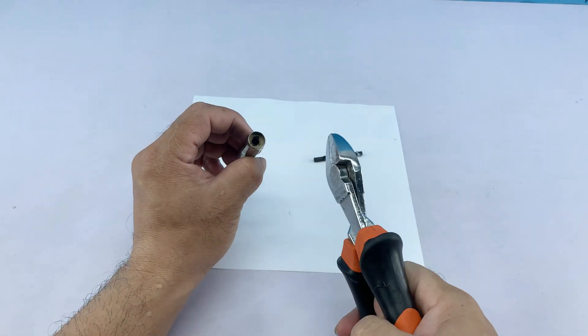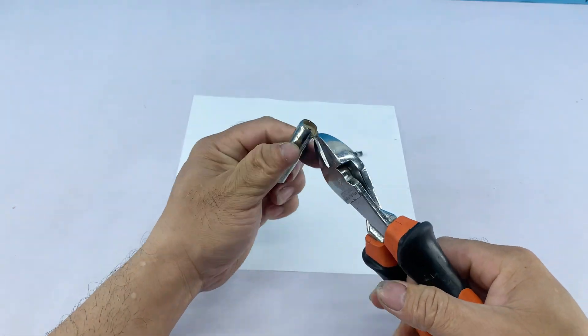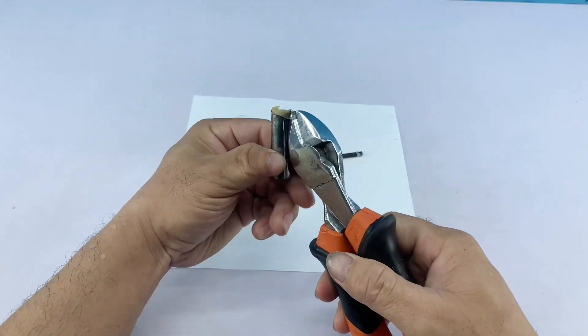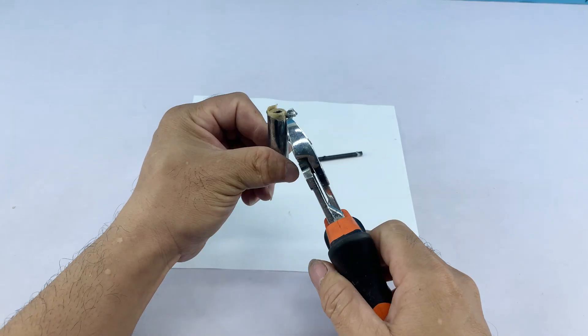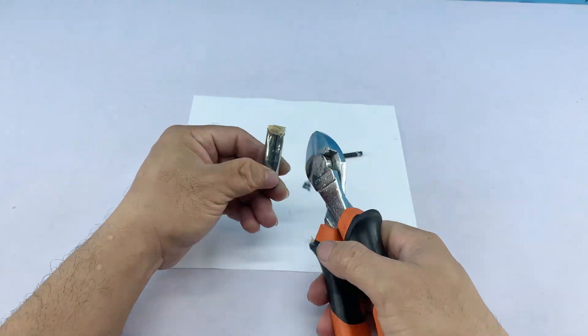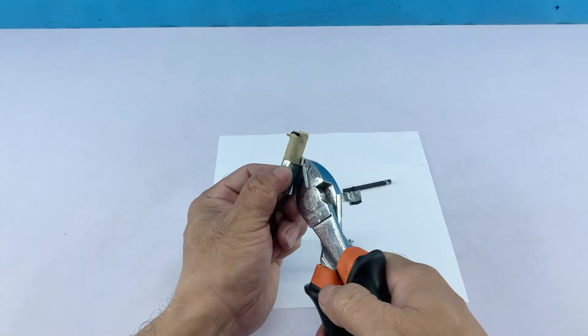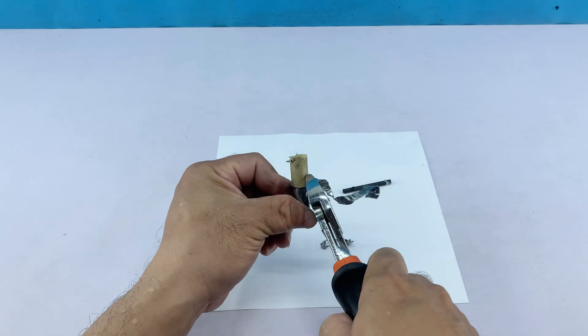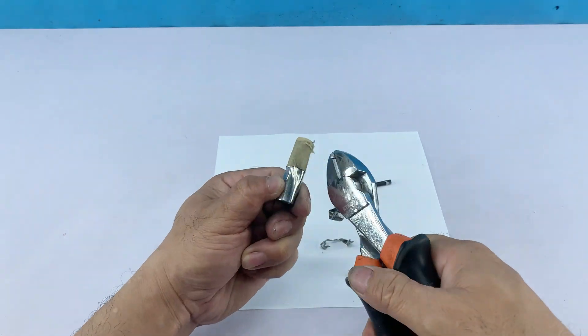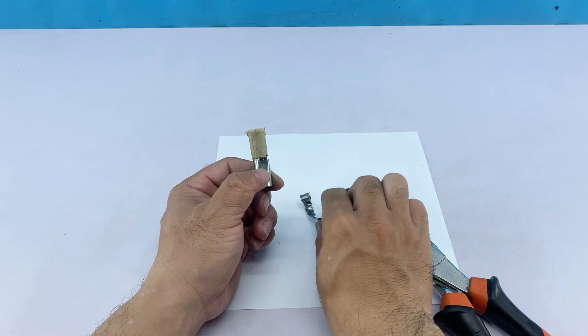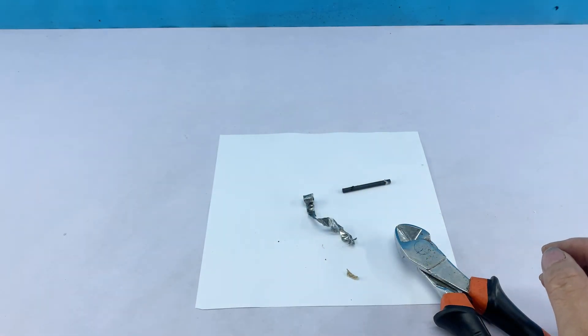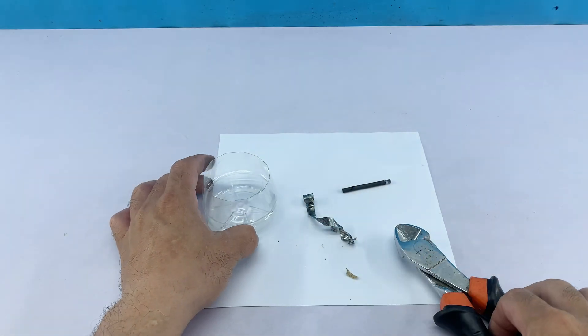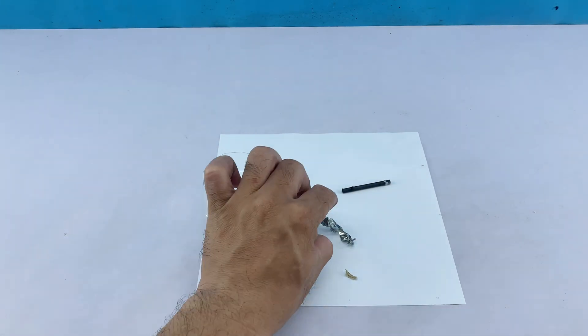I used pliers to separate the aluminum layer on the outside of the battery. I used scissors to cut the aluminum shell that has just been separated.